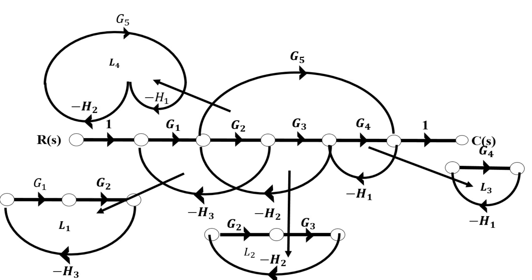As we have done before, we will find gains for these loops. Gain of the first single loop P11 equals minus G1 times G2 times H3, because H3 is a feedback gain, so it will be minus. In the same way, we find P21, P31, and P41.